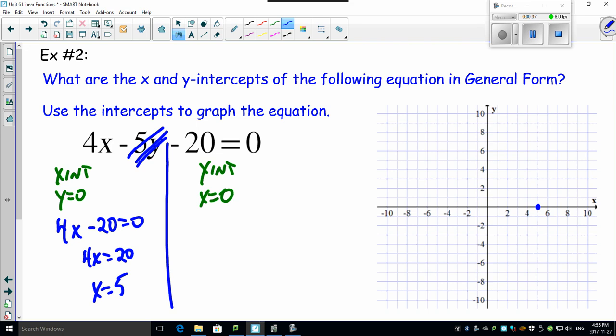Now x equals zero, that means this guy's gone, leaving you with minus 5y minus 20 equals zero. So bring the 20 over to the other side, that equals 20. Divide by minus 5, y equals...